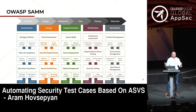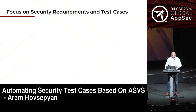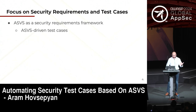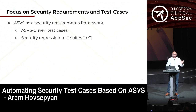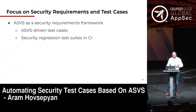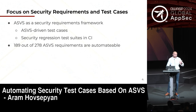The downside of SAMM is it can be overwhelming, and the typical question I get is: which activities should we pick first? My answer is to focus on security requirements and test cases. Leverage ASVS as a security requirements framework, write test cases based on those ASVS requirements, and put them in your CI/CD pipeline — so you automate your requirements. That's what we did, and that's what I'm going to talk about.